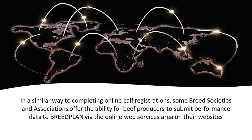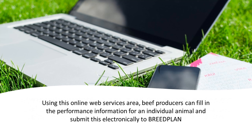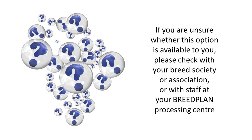In a similar way to completing online calf registrations, some breed societies and associations offer the ability for beef producers to submit performance data to BreedPlan via the online web services area on their websites. Using this online web services area, beef producers can fill in the performance information for an individual animal and submit this electronically to BreedPlan. If you are unsure whether this option is available to you, please check with your breed society or association or with staff at your BreedPlan processing centre.